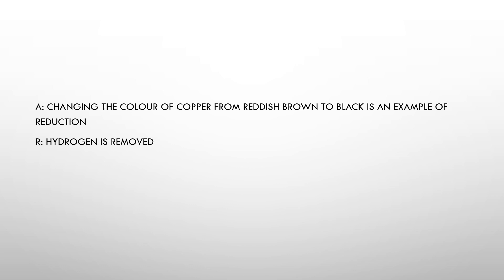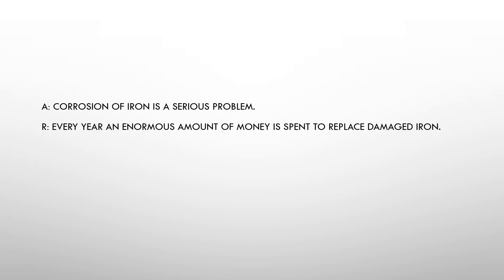This is an assertion-reasoning question. Assertion: changing the color of copper from reddish brown to black is an example of reduction; Reason: hydrogen is removed. The answer is — assertion is true and the reason is the correct explanation of the assertion. This color change of copper from reddish brown to black is truly an example of reduction, and in reduction generally hydrogen is removed, so the reason is the correct explanation.